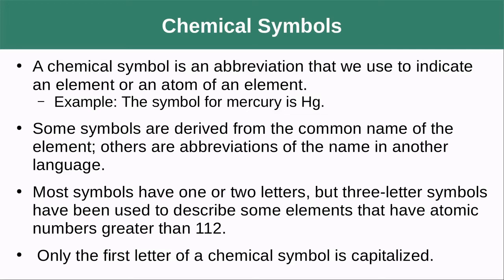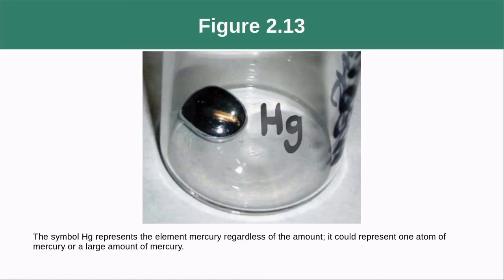Chemical symbols are the symbols you see on the periodic table — they're used to abbreviate elements. Mercury, for instance, has the chemical symbol Hg. A lot of them were derived from old names in other languages, so they don't always make sense to a native English speaker. Most have one or two letters, but some of the newer elements at the bottom have three letters. Importantly, only the first letter of the chemical symbol is capitalized — this will matter when we write out formulas.